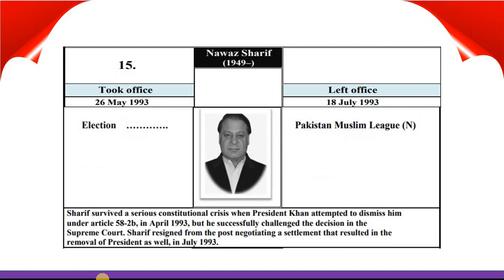Nawaz Sharif took office 26th May 1993 and left office 18th July 1993. He belongs to Pakistan Muslim League N. Sharif faced a serious constitutional crisis when President Khan attempted to dismiss him under Article 58-2(B) in April 1993, but he successfully challenged the decision in the Supreme Court. Sharif subsequently resigned, negotiating a settlement that resulted in the removal of the President as well in July 1993.